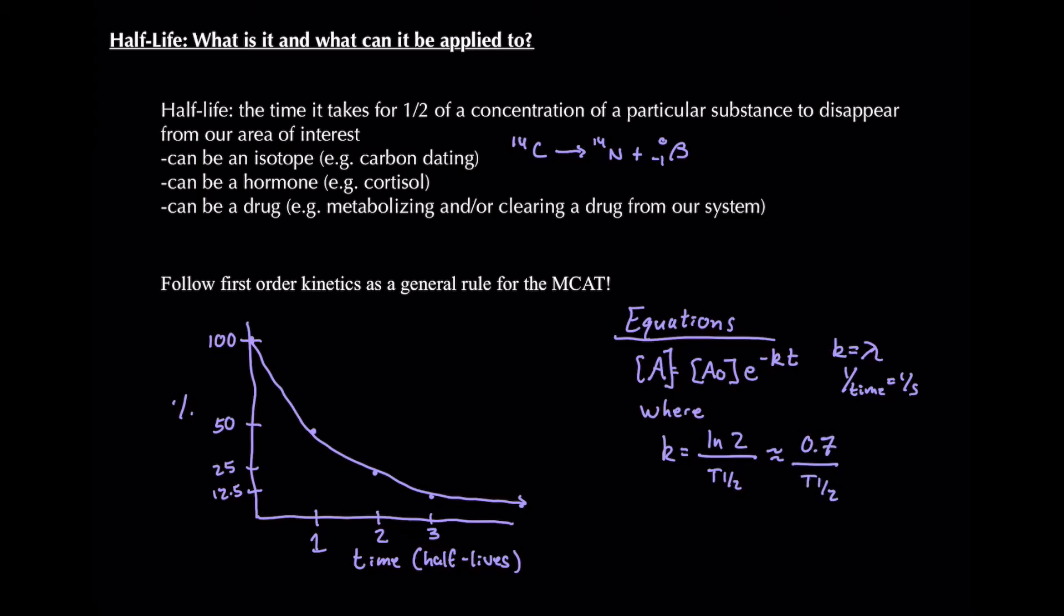Now, if that doesn't make sense, I'm going to derive this equation really quickly. So let's erase this graph and see how we got to this. So if we have our general equation, [A] is equivalent to our original concentration times e^(-kt).